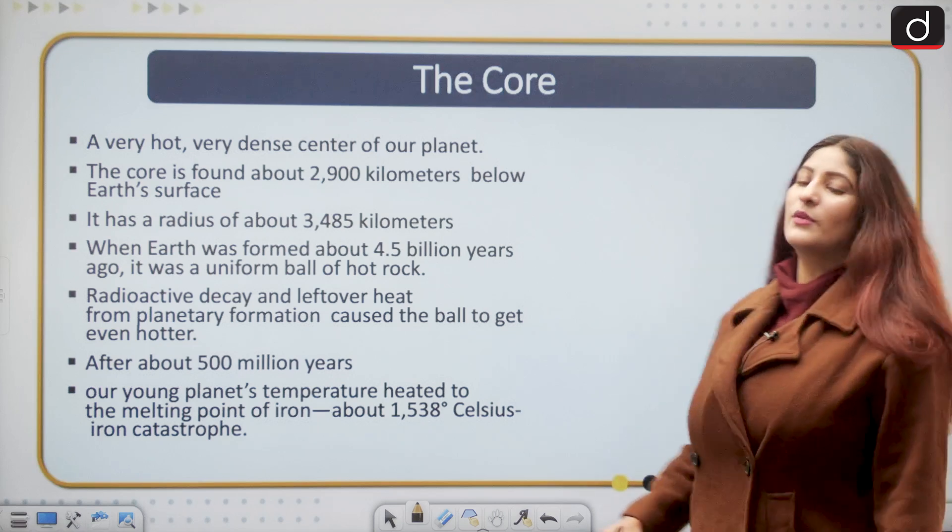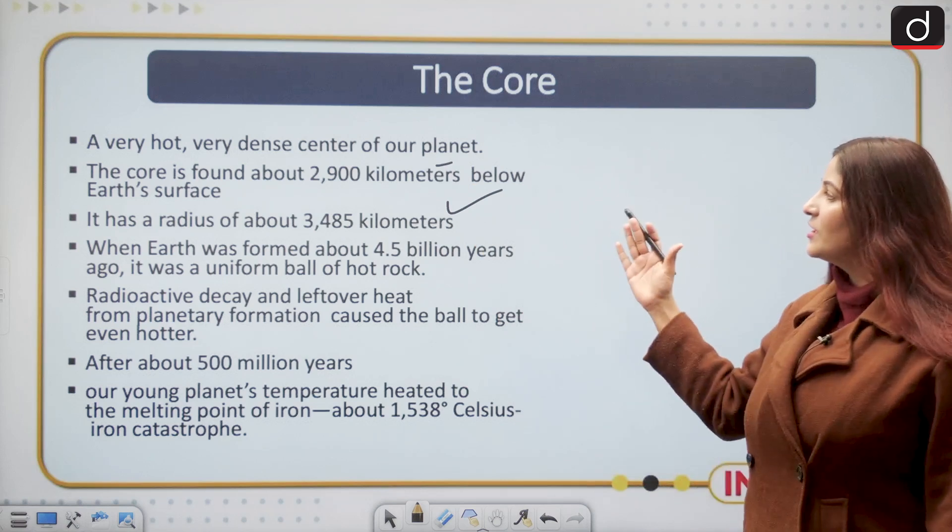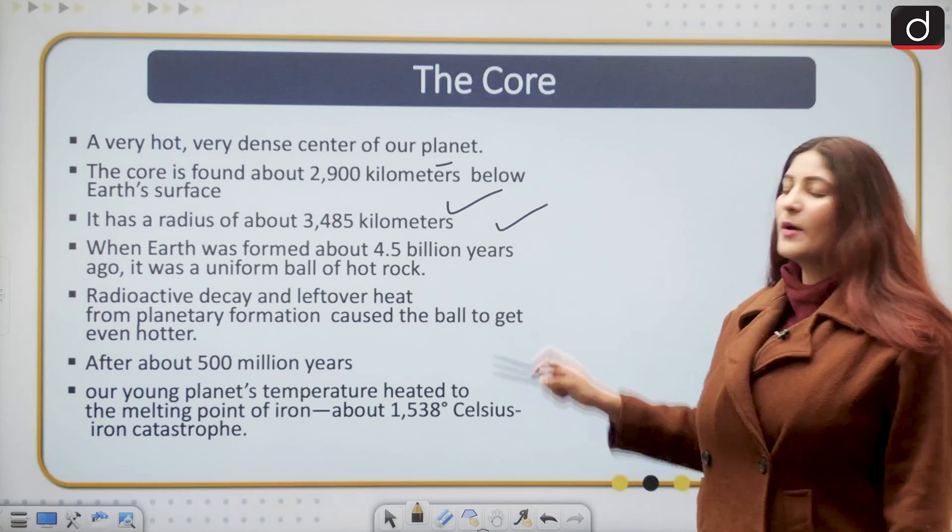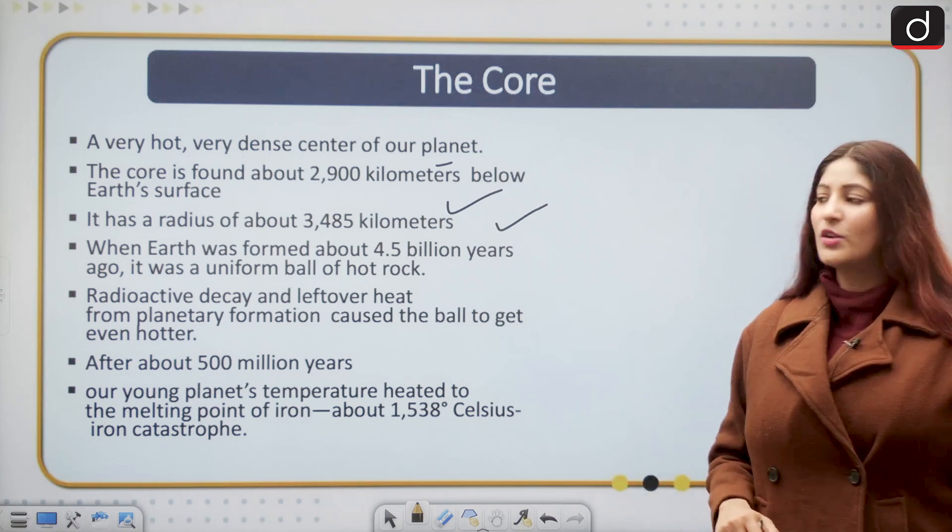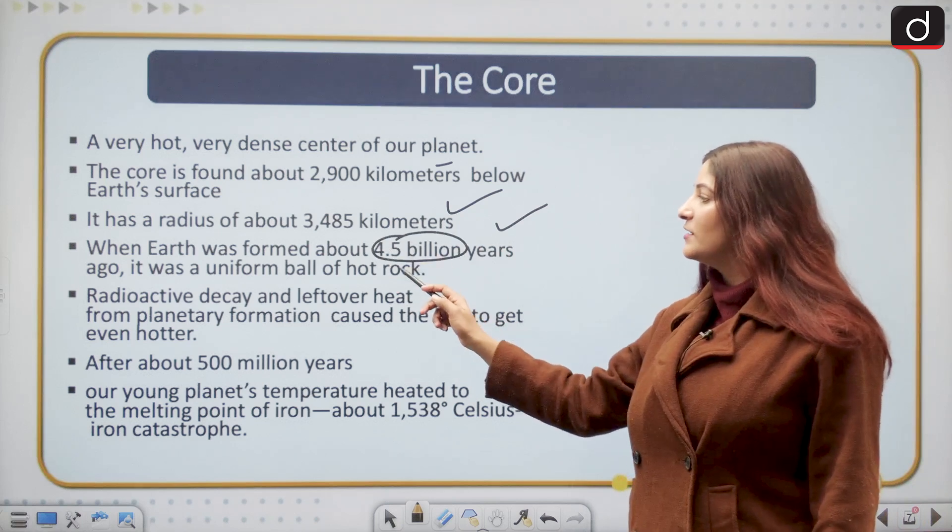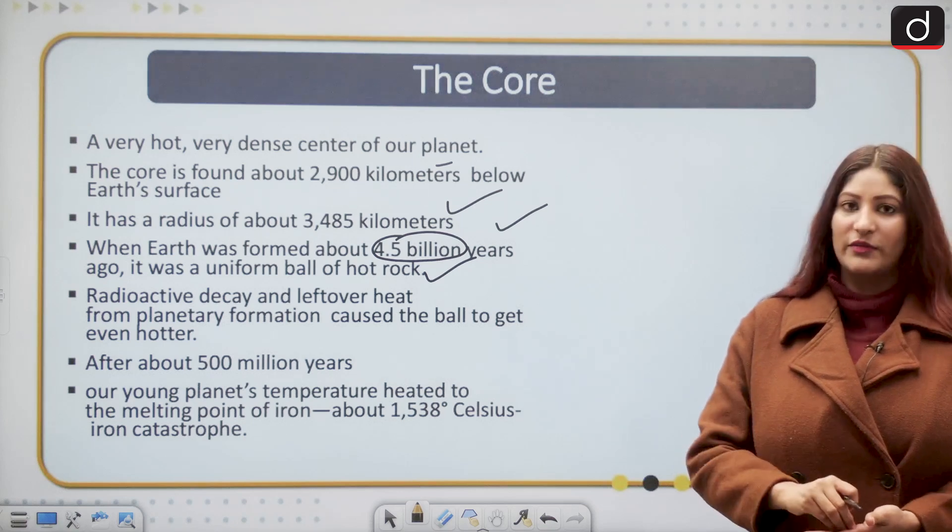Now the core is a very hot and very dense center of our planet. It is found about 2,900 kilometers below the earth's surface. It has a radius of about 3,485 kilometers. When the earth was formed about 4.5 billion years ago it was a uniform ball of hot rock. The core is the younger part of the earth.